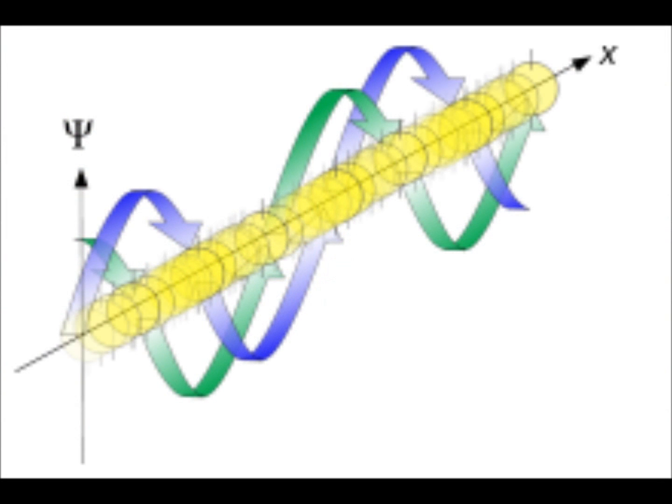Light travels at approximately 300 million meters per second in a vacuum. That's 186,000 miles per second. It is a strange substance which behaves differently at a quantum level.